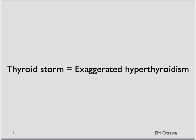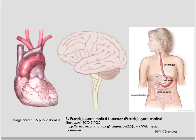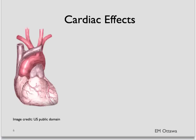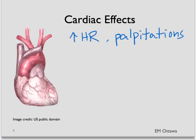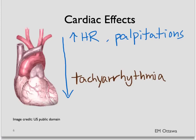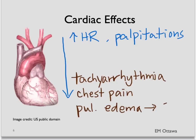What are those clinical features? They mainly affect three different parts of the body: the heart, the brain, and the GI tract. In the heart, in simple hyperthyroidism, there is tachycardia and palpitations. As the patient gets into thyroid storm, the symptoms become much worse — now there are tachyarrhythmias, chest pain, and pulmonary edema, leading to shortness of breath.